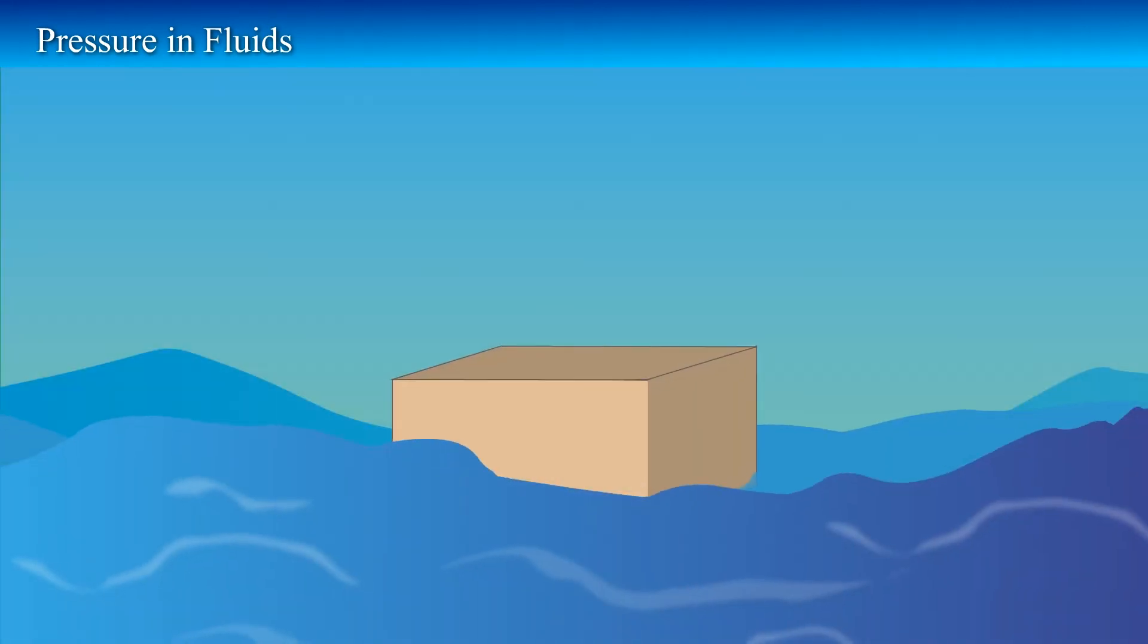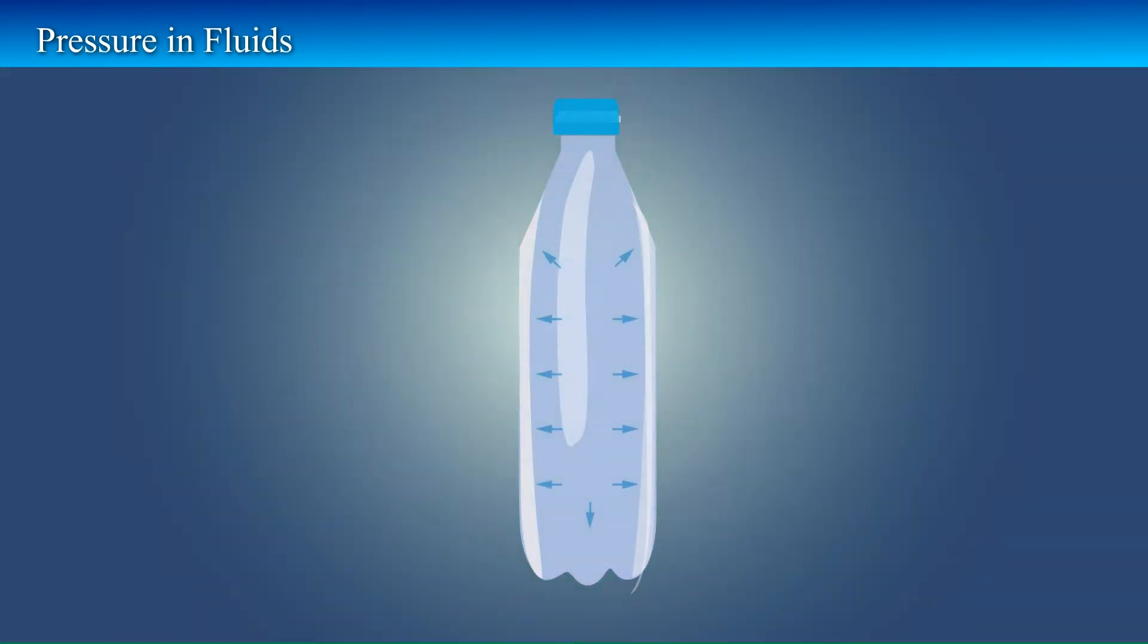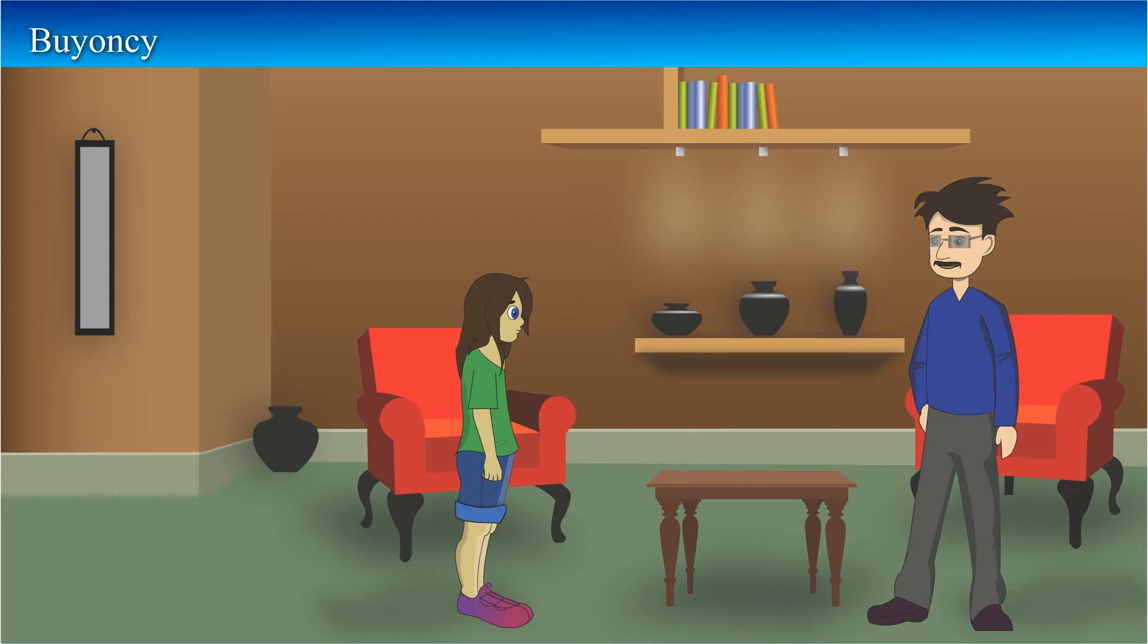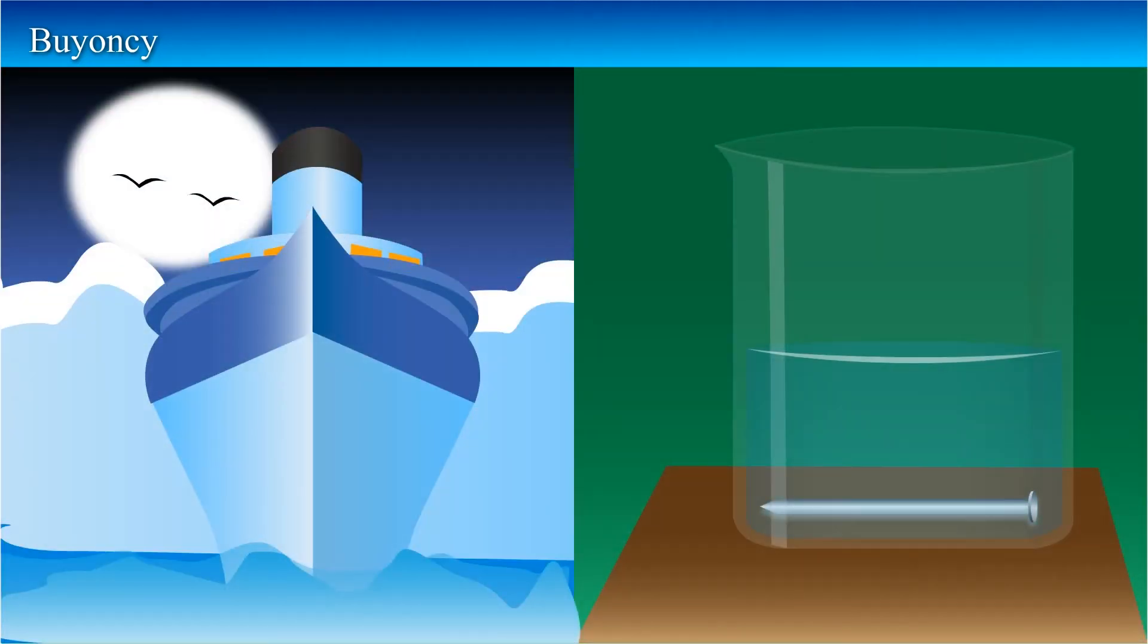A solid exerts pressure on a surface due to its weight. Similarly, fluids have weight and they also exert pressure on the base and walls of the container in which they are enclosed. Dad, I wonder why a ship made up of iron and steel does not sink in water, but a small coin or nail sinks easily in water.